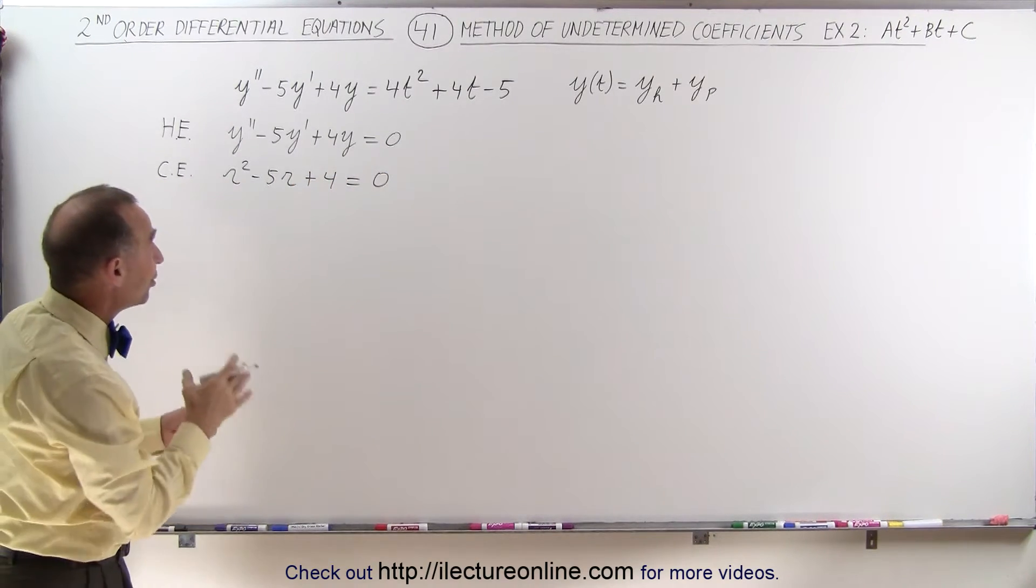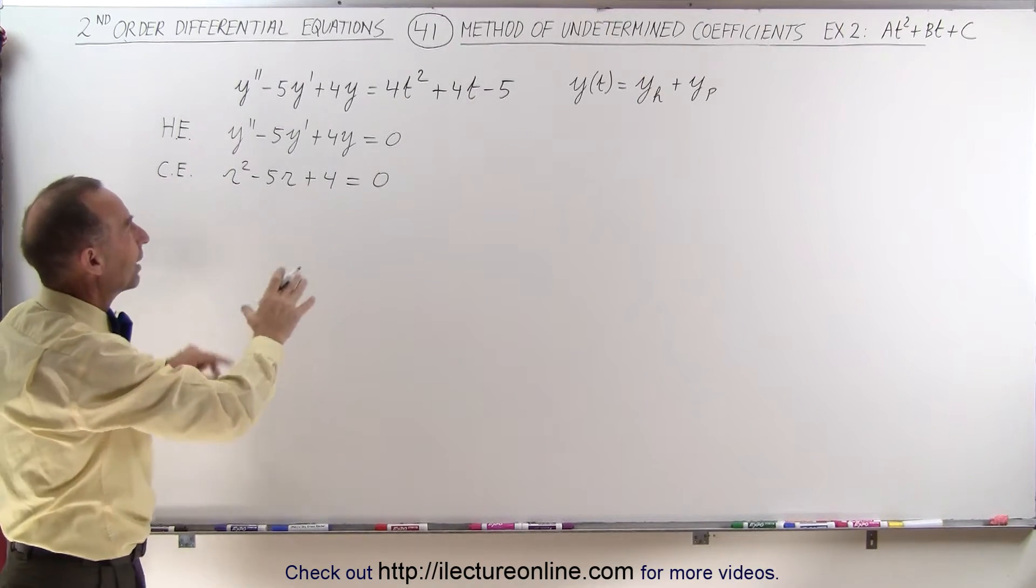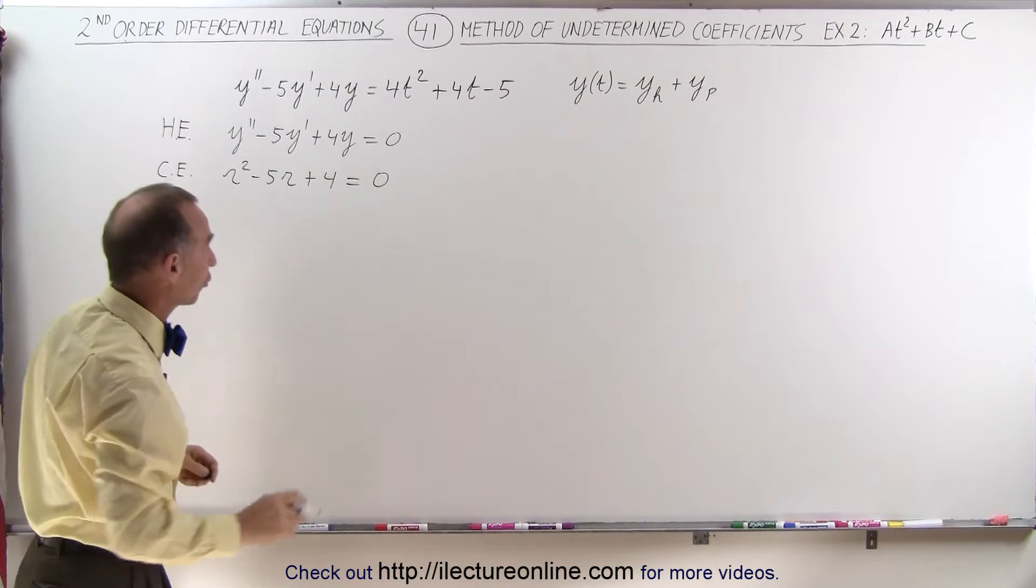And so we get r squared minus 5r plus 4 equals 0. Notice that I used the same homogeneous part as I did in the previous example just so we can quickly run through that and concentrate on how to do the particular part of the solution.